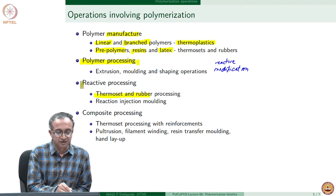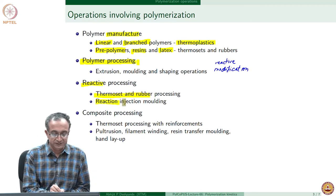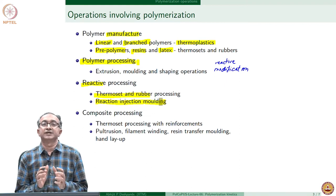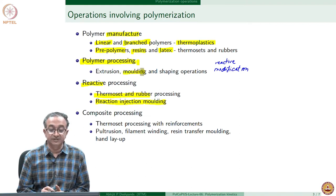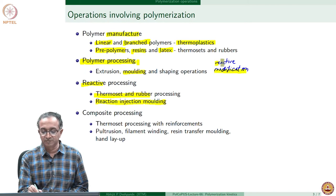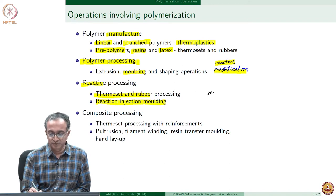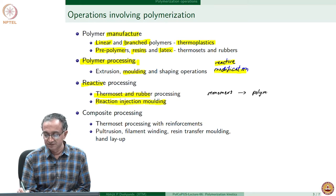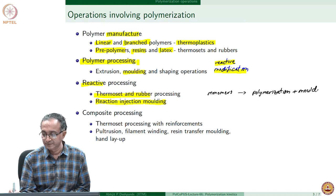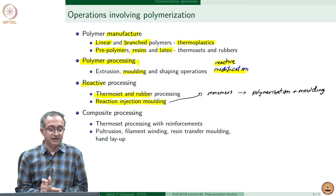For thermoset and rubber processing, it definitely involves polymerization and cross-linking reactions. But we also have processes such as reaction injection molding. Injection molding is generally a shaping operation where we are involved with flow and some amount of reactive modification. But reaction injection molding is where we start with monomers and carry out polymerization and molding simultaneously. Reaction injection molding therefore combines both of these.